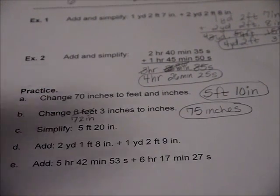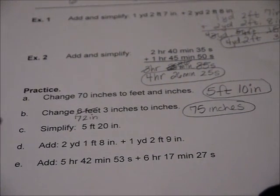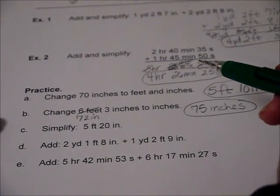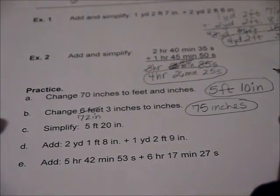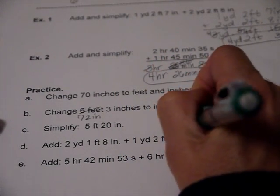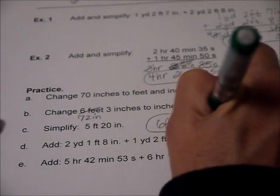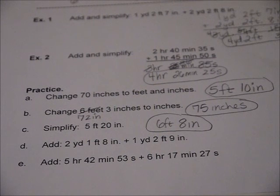Alright, simplify 5 feet 20 inches. Well, we have too many inches here. Remember, 12 inches make a foot, so it looks like we can take 12 away from that and be left with 8 inches, and now we have 6 feet 8 inches. So if someone said I'm 5 foot 20 inches, they're really 6 feet 8 inches.